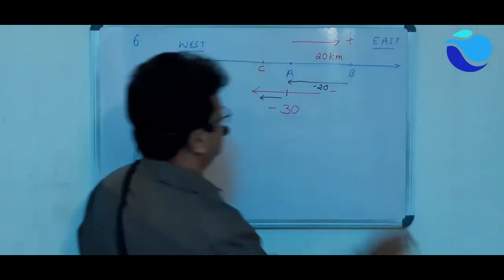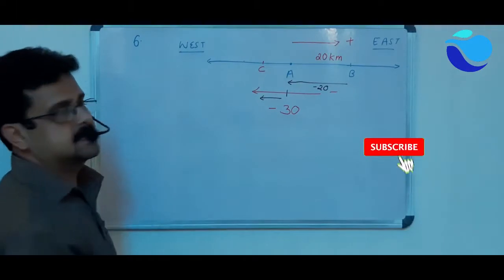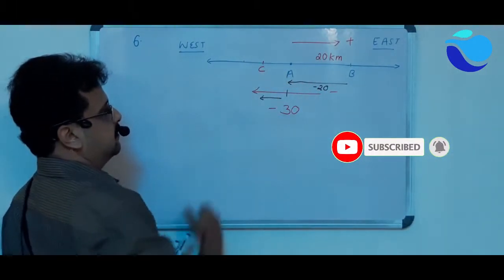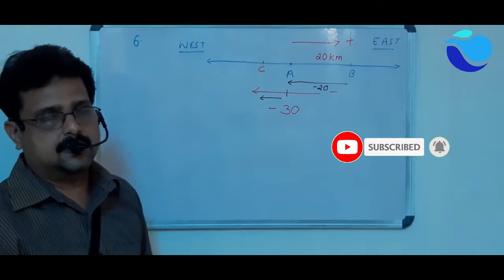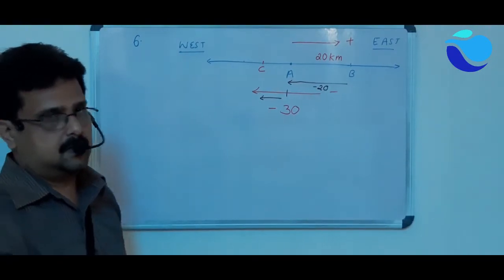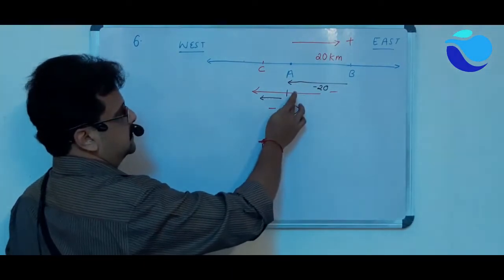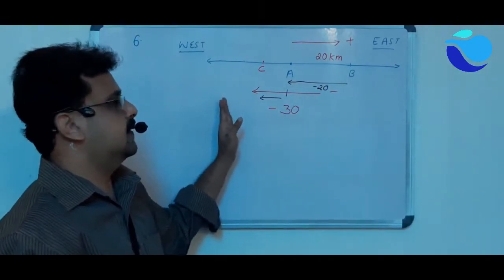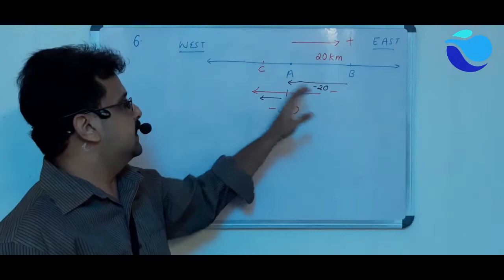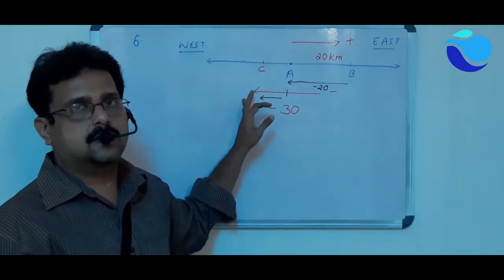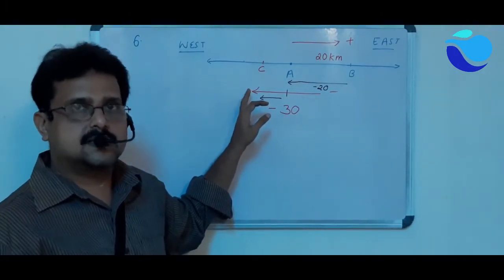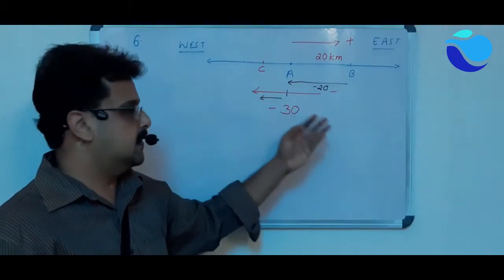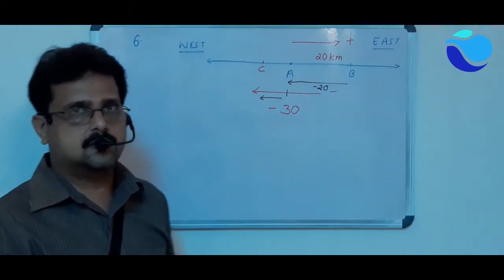Alternatively, from A to B is 20 kilometres, and from A to the point directly opposite is minus 20. She is travelling 30 kilometres total, so from 20 to reach 30 she travels 10 more kilometres. Since the direction is westward and therefore negative, the final position is minus 10.